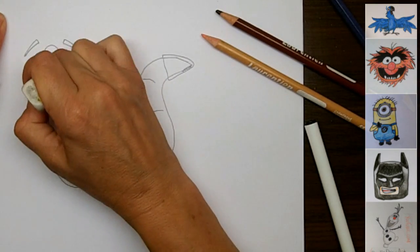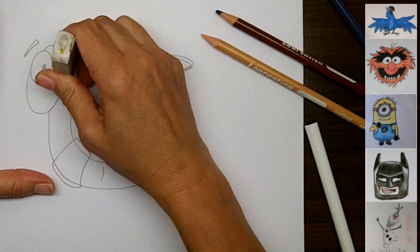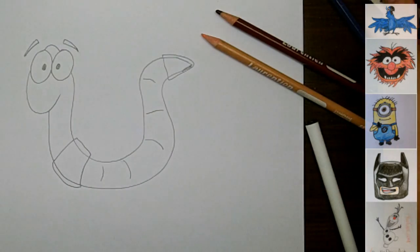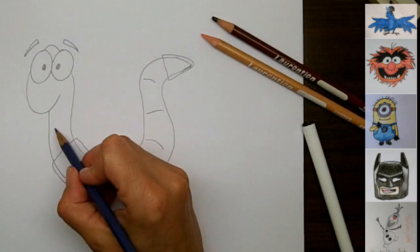So here I go. I'm just going to erase this extra line that was here and a little extra line that was here. And that is my cute little cartoon worm.